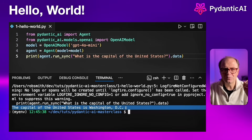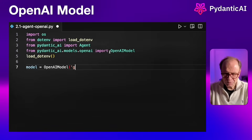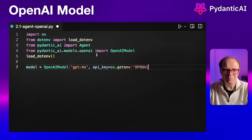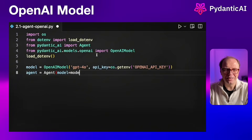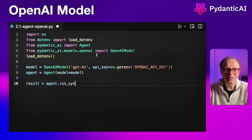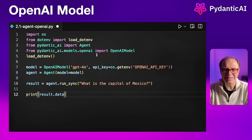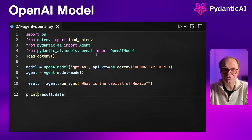Let's move on to our next example, which will use an OpenAI model with the environment variable loaded from .env. We import Agent from PydanticAI and OpenAI model from pydantic_ai.models.openai. We also use dotenv and load_dotenv. We create an instance of the model using OpenAI model GPT-4o, and pass the API key because in future iterations you may have multiple models each with their own keys. We create an instance of our agent and run it with result = agent.run_sync. We ask for the capital of Mexico as a simple test.